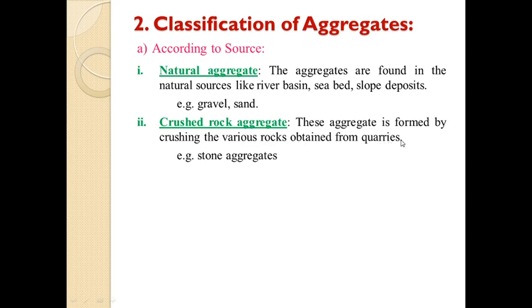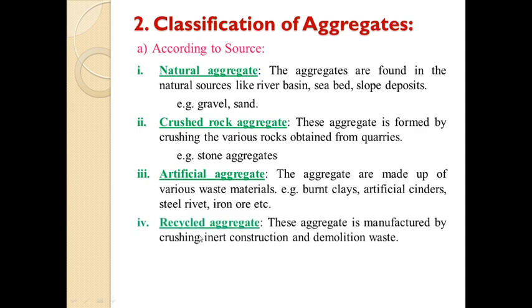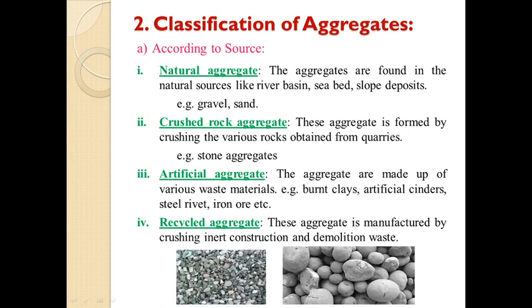Crushed rock aggregate is produced by crushing rocks in machines. An example is stone aggregates. Next are artificial aggregates, made up of various waste materials like burnt clay, artificial cinders, steel river, and iron ores. Next are recycled aggregates, manufactured by crushing inert construction and demolition waste — these aggregates are reused after demolition of any structure. Here we can see natural aggregates and artificial or recycled aggregates.